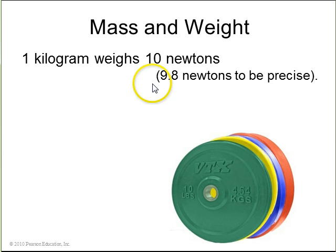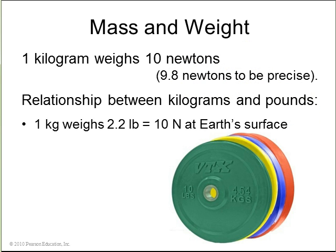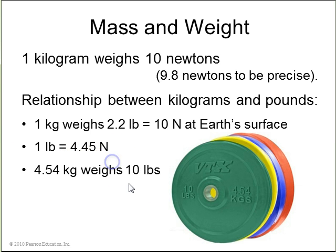Some conversions. One kilogram weighs 10 Newtons, or 9.8 Newtons to be precise, here on Earth. And one kilogram weighs 2.2 pounds at Earth's surface. One pound is the same thing as 4.45 Newtons. Here we have a 10-pound weight, which has a mass of 4.54 kilograms.